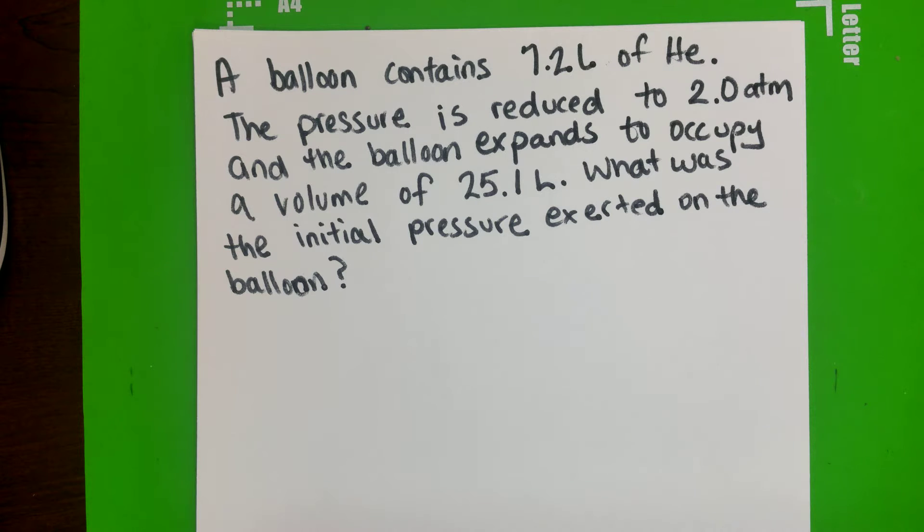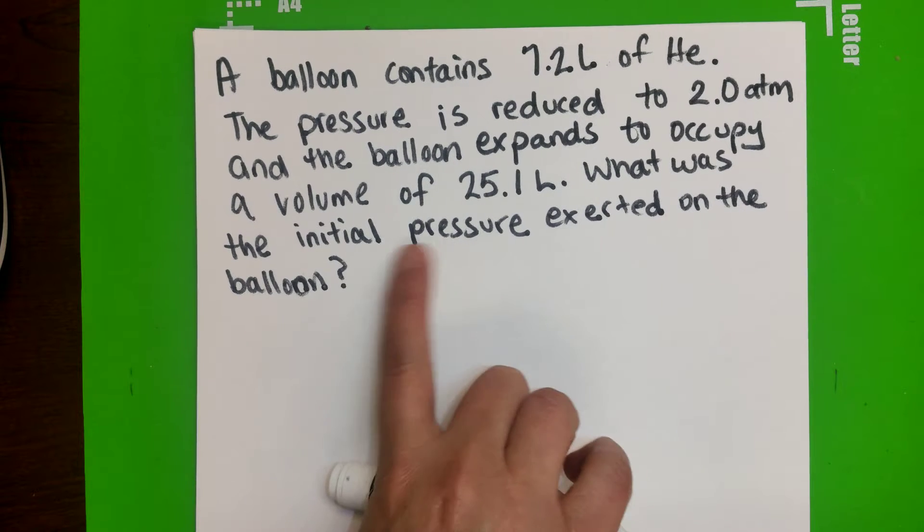So now we're in question number three. A balloon contains 7.2 liters of helium. The pressure is reduced to 2.0 ATMs, and the balloon expands to occupy a volume of 25.1 liters. So what was the initial pressure?